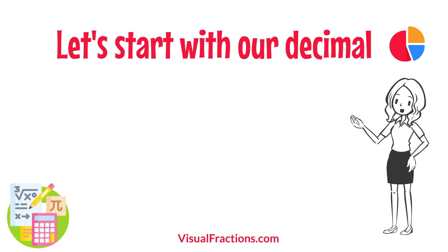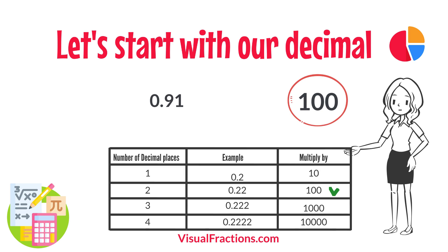Let's start with our decimal, 0.91. Notice there are two digits to the right of the decimal. This places it in the hundredths position.